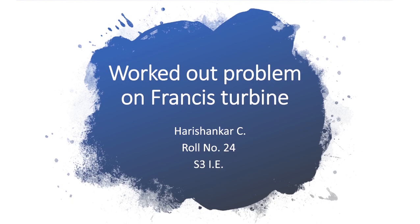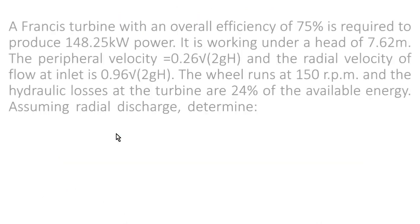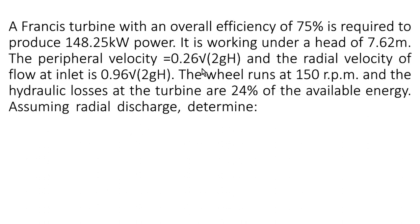This is a worked out problem. Now let's read the question. A Francis turbine with an overall efficiency of 75% is required to produce 148.25 kilowatt power. It is working under a head of 7.62 meters.